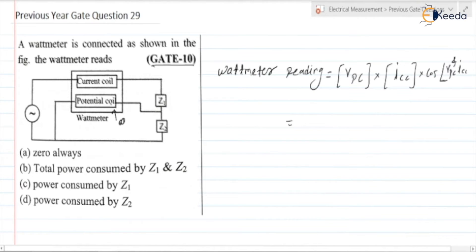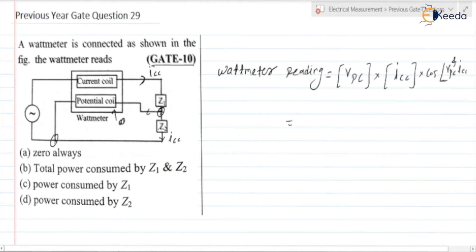The potential coil of the watt meter generally has a high resistance. The current coil is connected in series with the load branches. The ICC is the current flowing through Z1, which equals current flowing through Z2. Checking the potential coil connections — one terminal is connected at one node and the second terminal at another — so the potential coil is connected across Z2 only.